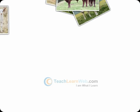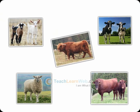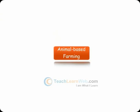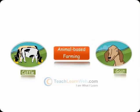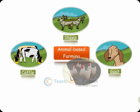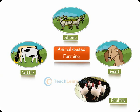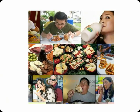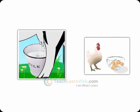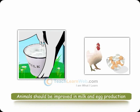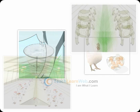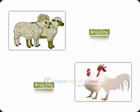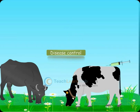Animal husbandry is the scientific management of animal livestock. Animal-based farming includes cattle, goat, sheep, poultry and fish farming. To meet the food demands of a growing population, animals should be improved in their production. It includes different aspects of feeding, breeding and disease control.